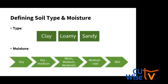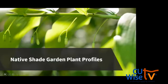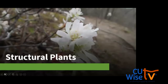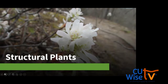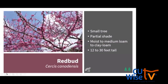Now we'll jump into our plant profiles, starting with structural plants. For this webinar, we'll assume you already have your overstory shade trees in place — whether a maple, oak, or even a non-native cultivar. We're not going to talk about adding those trees, but rather some small trees and shrubs you could add to the garden. The first is redbud, a small tree that can grow 12 to 30 feet tall. It tolerates partial shade and prefers moist to medium loamy soils, but can do okay with clay loam.